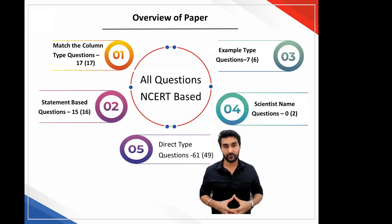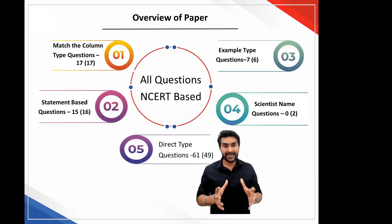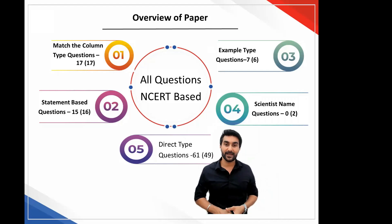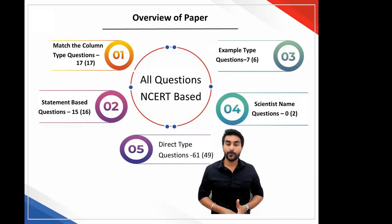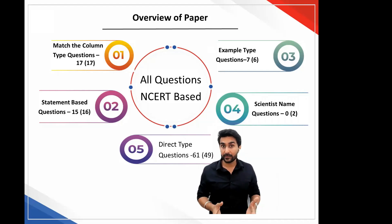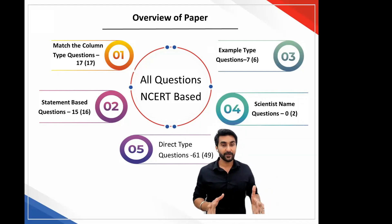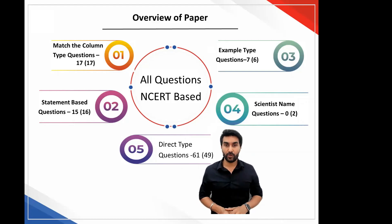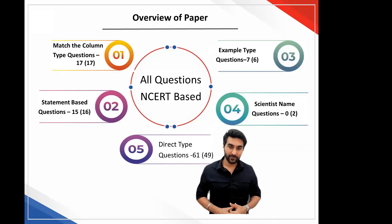No questions were asked on researchers or discoverers, as opposed to two questions last year — this year none of the scientists' names were asked. Like every year, the largest bulk of questions was the direct type, where a question is asked and the answer is a direct word or line. This year, you had 61 such questions, as opposed to 49 last year. Of course, the total number of questions was greater this year by 10, so we had 100 questions total.